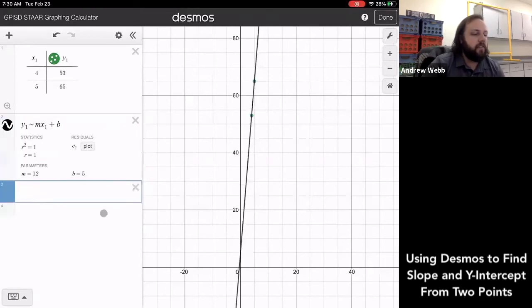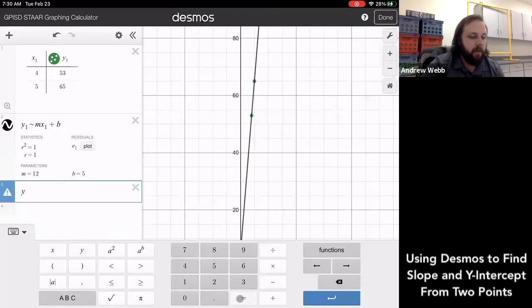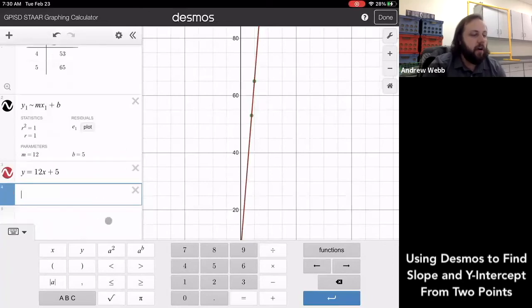So what I can do from this, and if we're trying to create different representations of this, I can take my formula, my Y equals MX plus B, substitute in my M and my B, which is five. Now I can see that it goes ahead and creates that line on there.